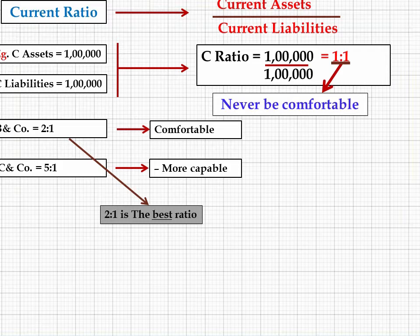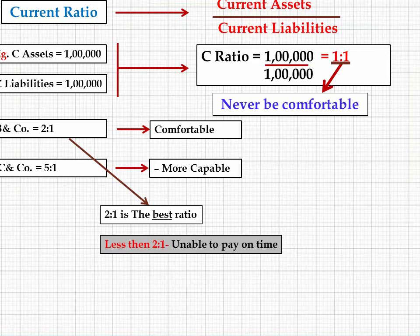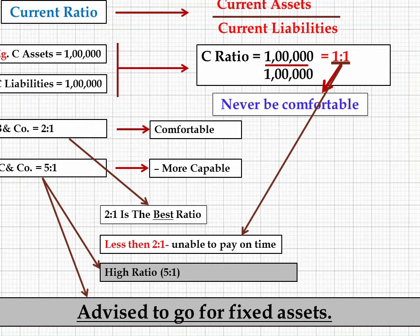Generally it is assumed that 2:1 is the best current ratio. If the ratio is less than 2:1, then if any current asset fails — such as being unable to recover money from debtors or sell stock in time — you won't be able to pay current liabilities on time. If it is too high, like 5:1, the assets of the company are tied up in current assets, and the company is advised to invest in fixed assets instead.